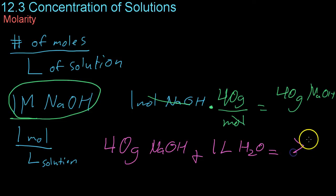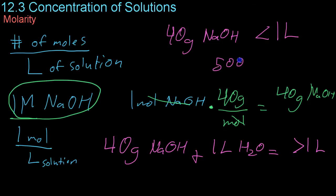Because that could possibly be greater than one liter of total solution. What you would do instead is take the 40 grams of sodium hydroxide and add it to something that is less than one liter, say, 500 milliliters, and then you would add in the other, say, 500 milliliters to bring the total solution to exactly one liter with one mole in it.